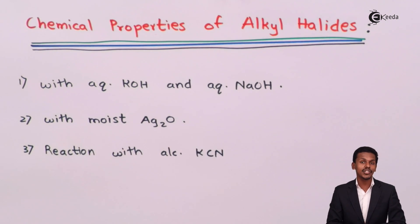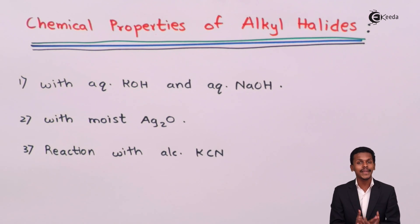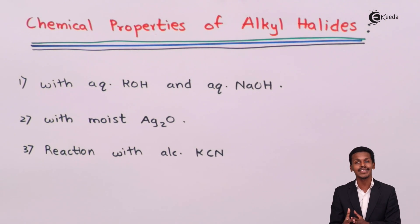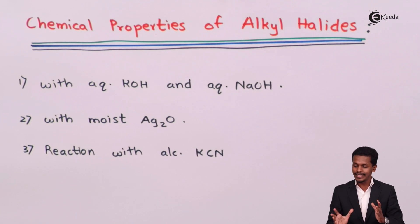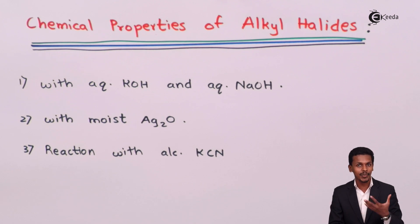The next is the reaction with alcoholic KCN, or potassium cyanide. Whenever alcoholic KCN is treated with an alkyl halide, the product we obtain is an alkyl cyanide. This is a very important reaction for understanding how an alkyl cyanide can be prepared.